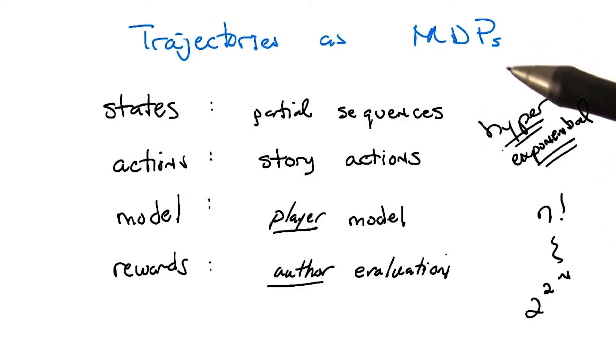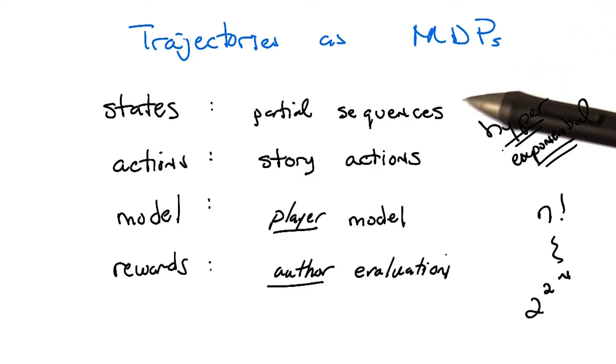Actually, before we do that, let me mention one other problem with thinking about things as Markov decision processes. And it's going to be a problem with the strength of a Markov decision process. So what is the goal of reinforcement learning? What's the goal of solving an MDP? Maximize reward. You maximize reward.